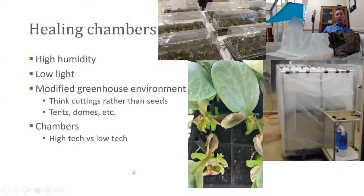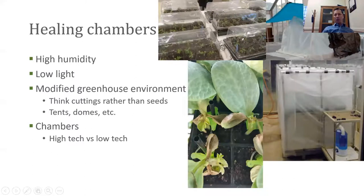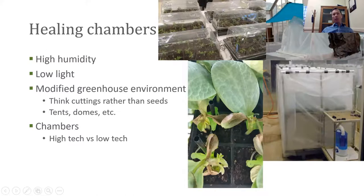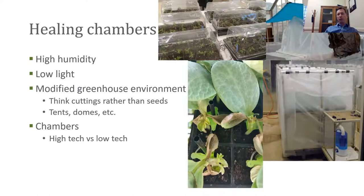For healing chambers, commercially I worked with insulated rooms with grow lights and fully climate-controlled environments — very high tech. But you can also build a healing chamber with a humidifier, or use these little mini greenhouses used for rooting cuttings or germinating seeds, with heat mats to keep temperature up. You can also use tents — if you have a greenhouse or sunroom, you're just creating an enclosed environment where you're limiting light, keeping humidity up, and keeping a warm temperature. Think cuttings rather than seeds: if you've rooted cuttings at home, think about that environment for healing the graft. Seeds need high light; for healing, we need low light.